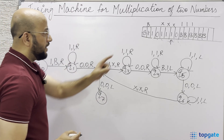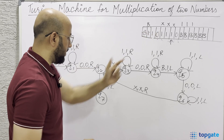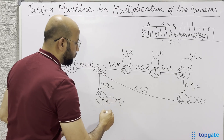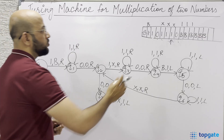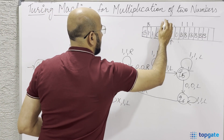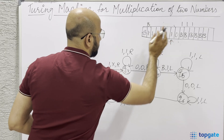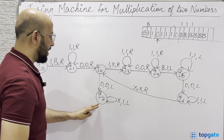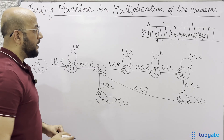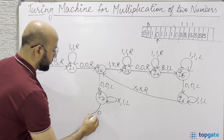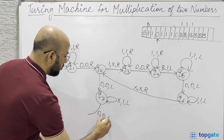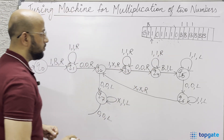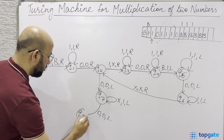At Q7, take a self loop: if you find an X, change it to 1 and go left - all Xs are reverted back to 1. The pointer then points to the 0 separator. At Q7, if you find a 0, keep it as 0 and go left, reaching state Q8. At Q8, if you find a 1, keep it as 1 and go left, skipping it, with the pointer now pointing to the blank on the left.